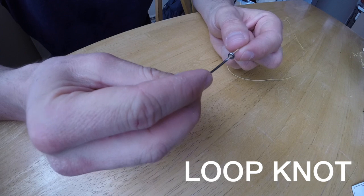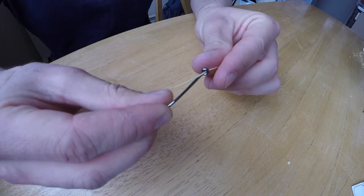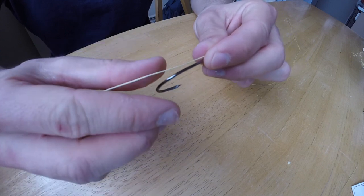I will first start off with the egg loop knot. So you go through the eye of the hook just like that, and then give yourself a tag end of a good inch and a half.